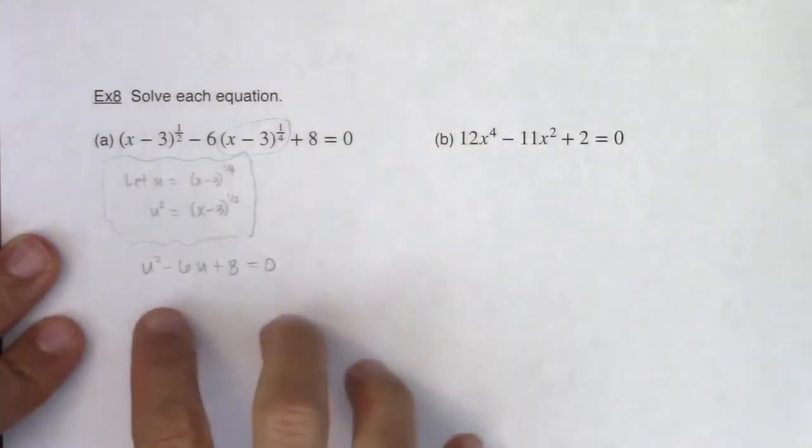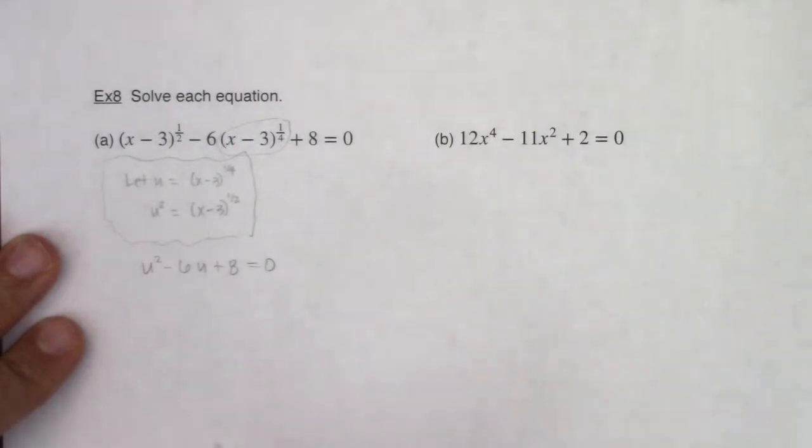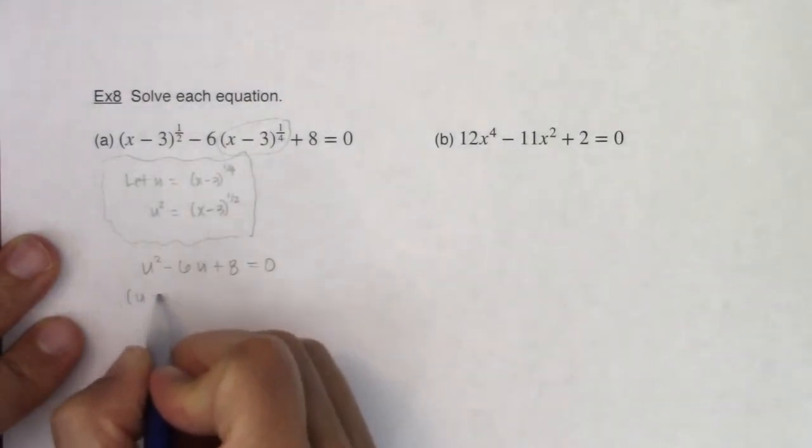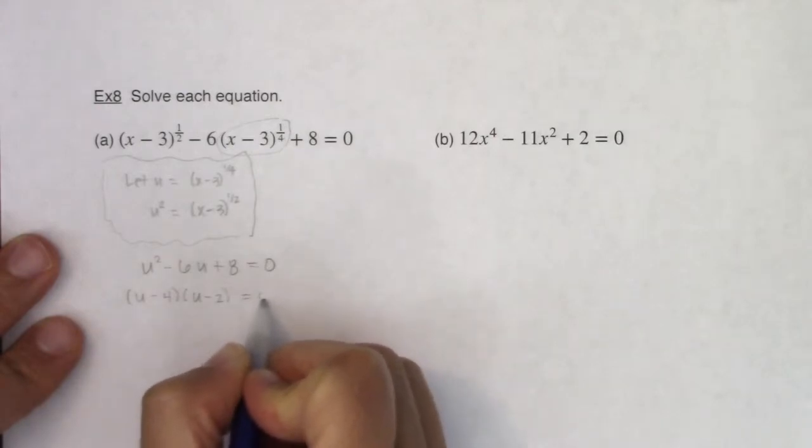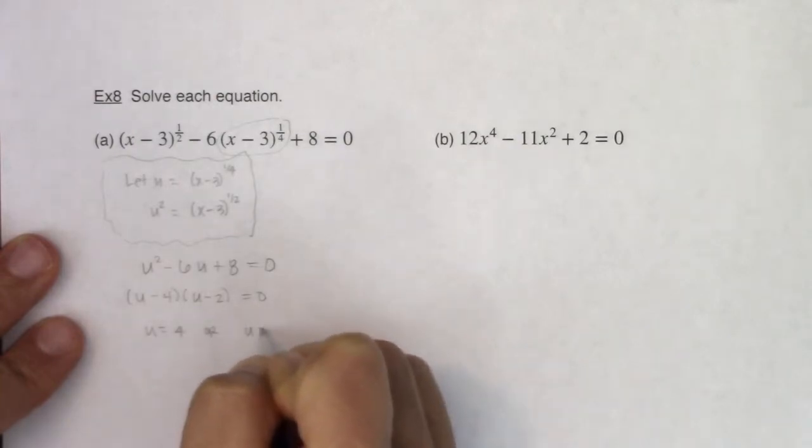Now I can opt to factor this, complete the square, or use the quadratic formula. And since it's relatively easy to factor, I'm just going to factor it, and I'm going to get u minus 4 times u minus 2 is equal to zero. And when I solve that, I'm going to get u is equal to 4 or u is equal to 2.